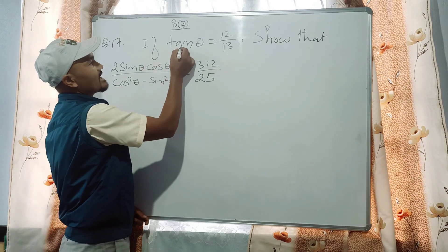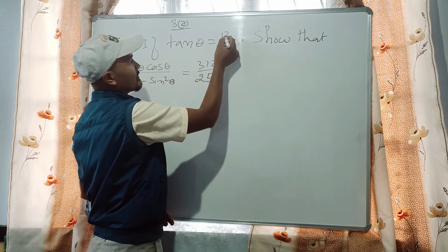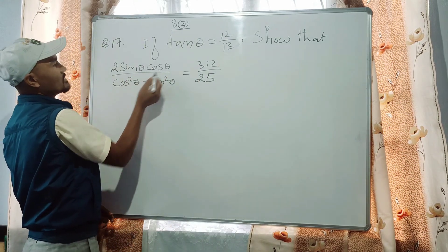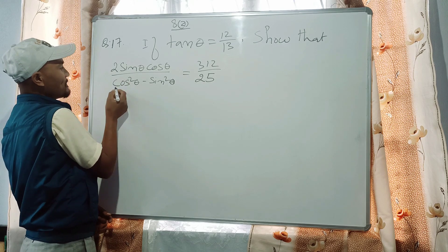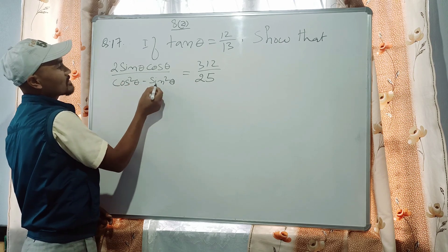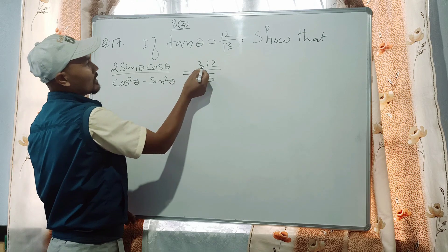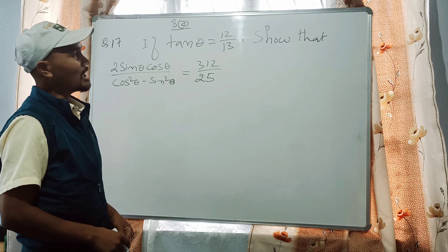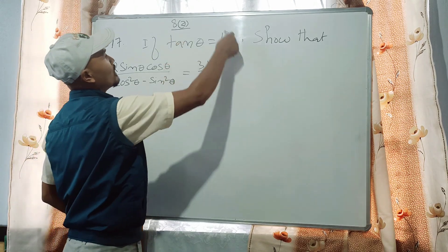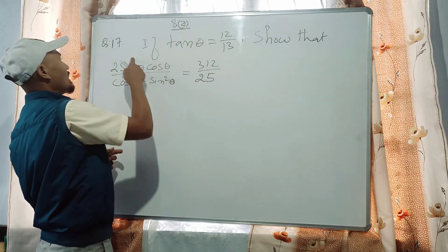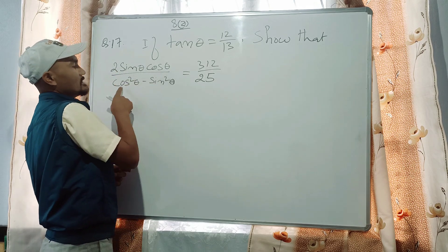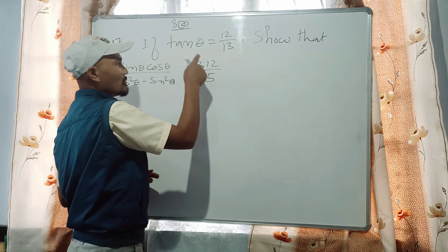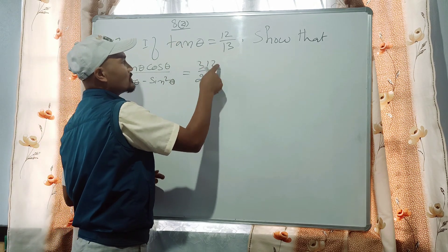If tan theta equals 12 by 13, show that 2 sin theta cos theta divided by cos theta minus sin theta equals 312 by 25. The value of 2 sin theta cos theta divided by cos theta minus sin theta is 312 by 25.